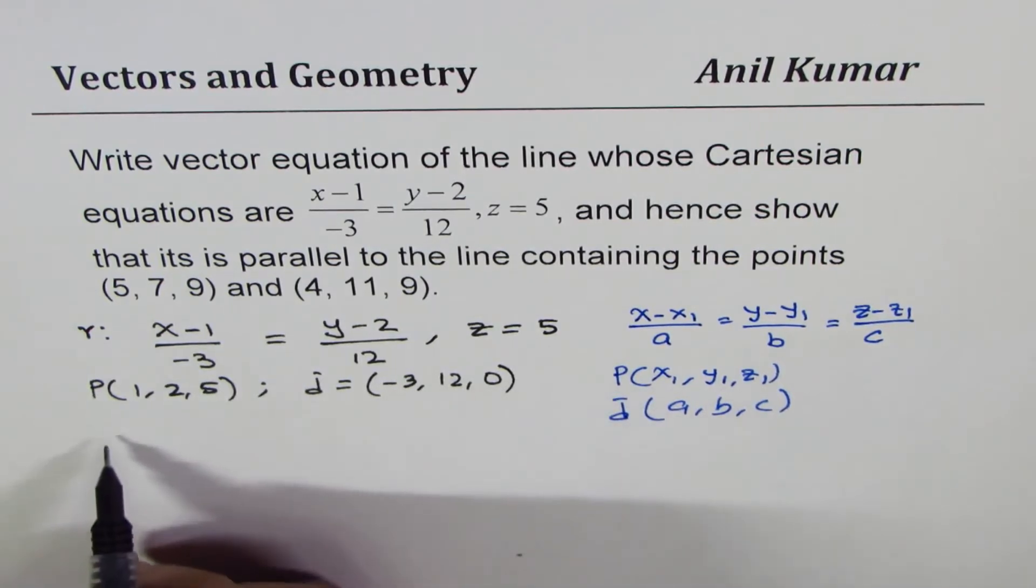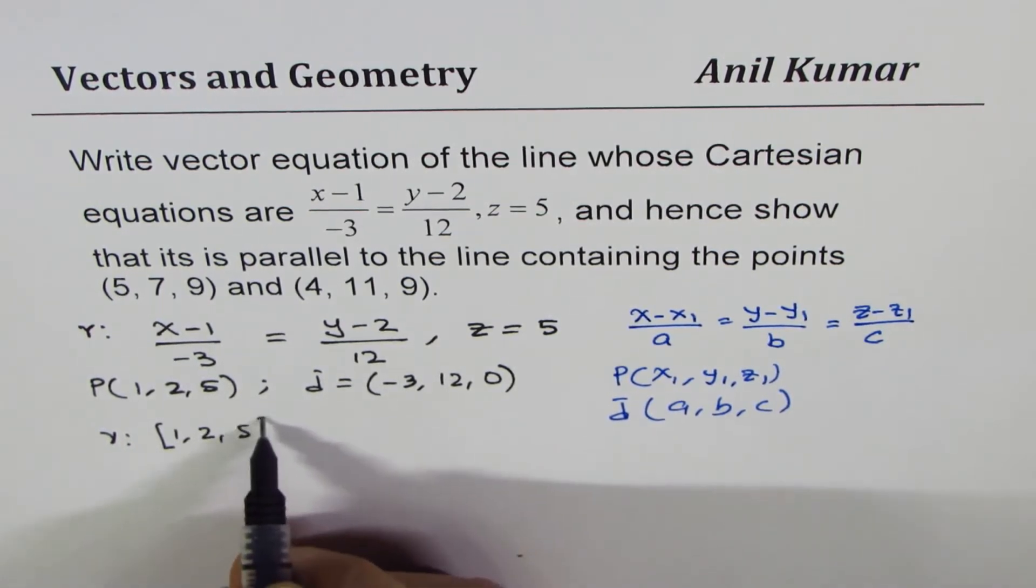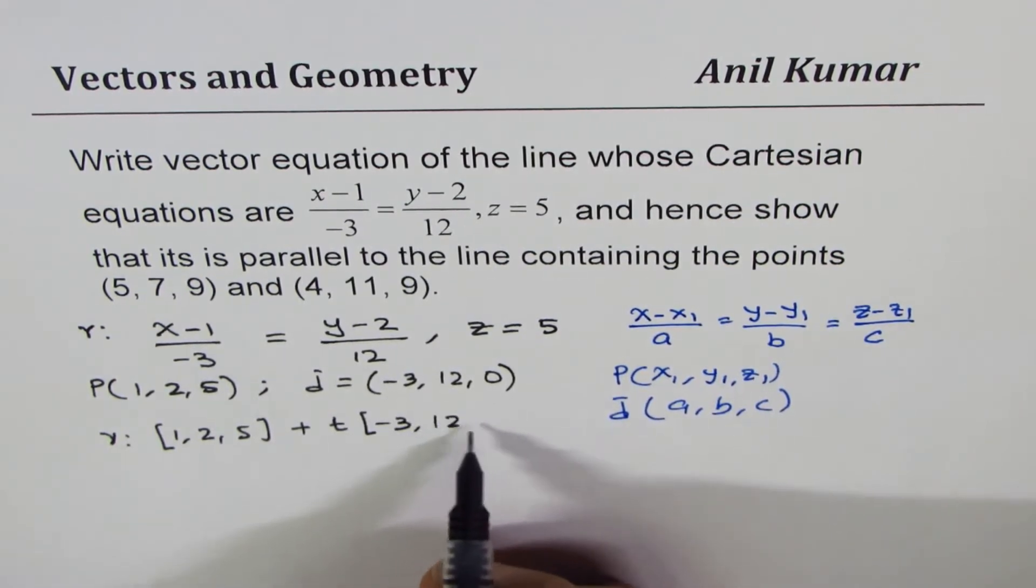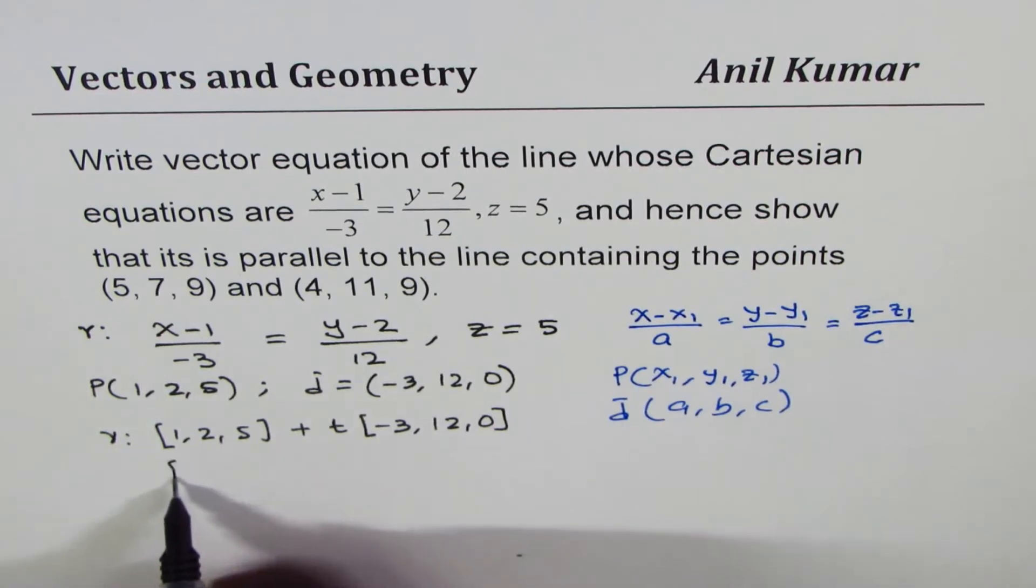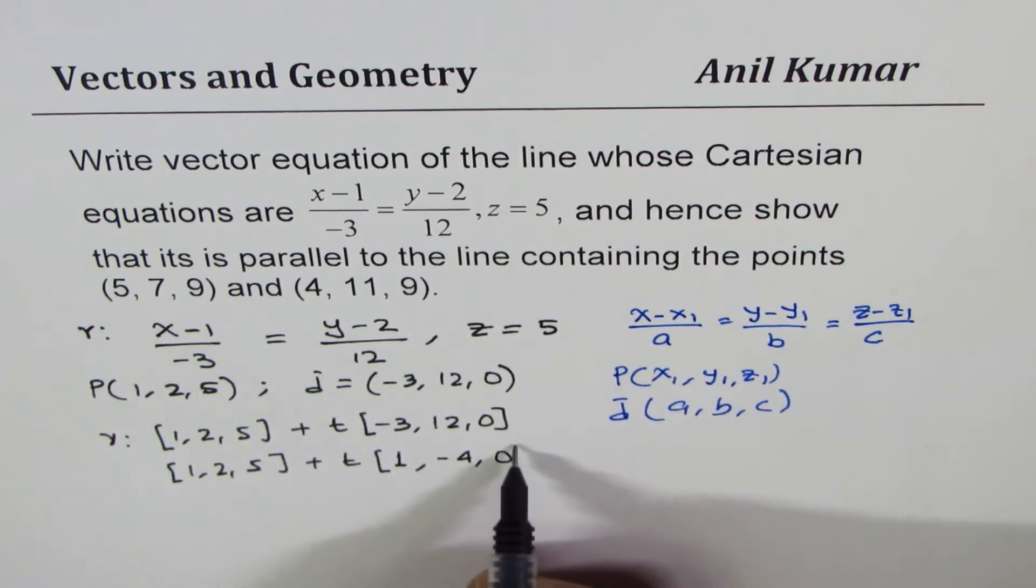With that, we can give the vector equation of the line as: (1, 2, 5) plus t times (-3, 12, 0). Now, you could also factor out 3, and you could also write this as (1, 2, 5) plus t times, if I take out minus 3, I get 1. This becomes minus 4. And 0.